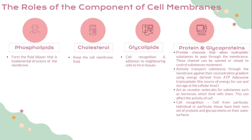Proteins and glycoproteins also actively transport substances through the membrane against the concentration gradient using energy derived from adenosine triphosphate, which is ATP — the source of energy for use and storage at the cellular level. They also act as receptor molecules for substances such as hormones which bind with them, and this can affect the activity of the cell. Cell recognition occurs because cells from a particular individual or tissue have their own set of proteins and glycoproteins on their outer surface.